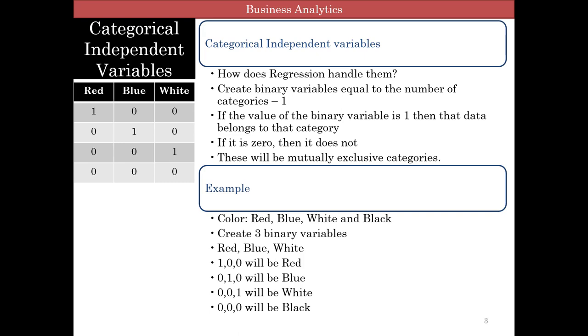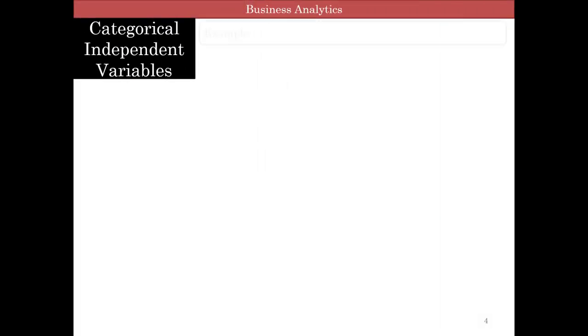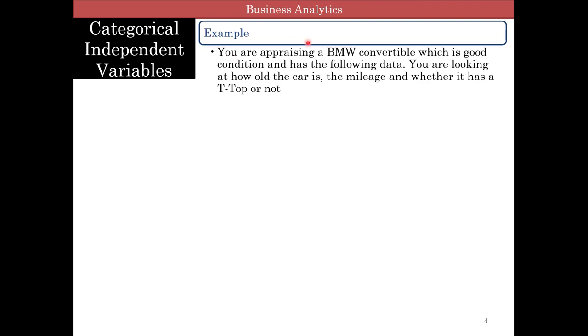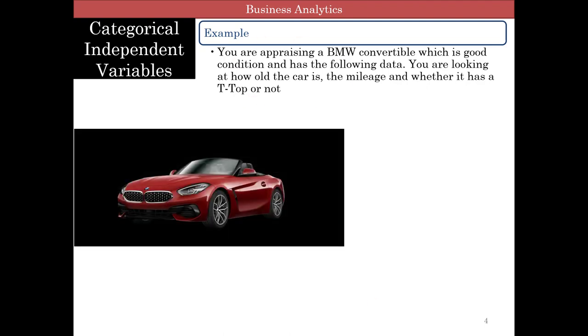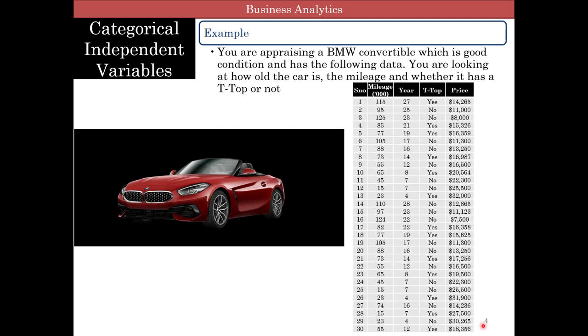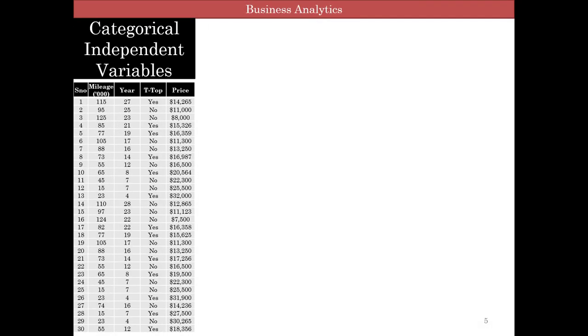So let's take an example here. You are appraising a BMW convertible, which is in good condition, and you have the following data. You're looking to see how old the car is, the mileage, and whether it has a T-top or not, and you're going to try to predict the price based on that. So here's the car, and here is the data you have. You have about 30 different cars with different mileages, how old they are, whether they have a T-top or not, and here is the price.